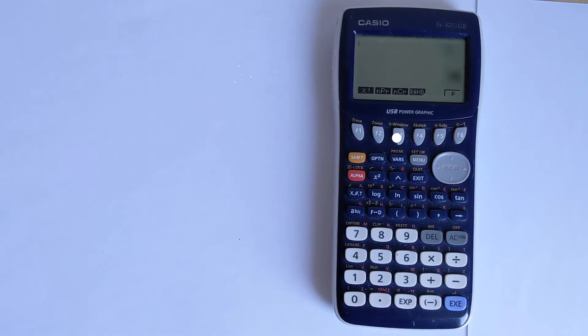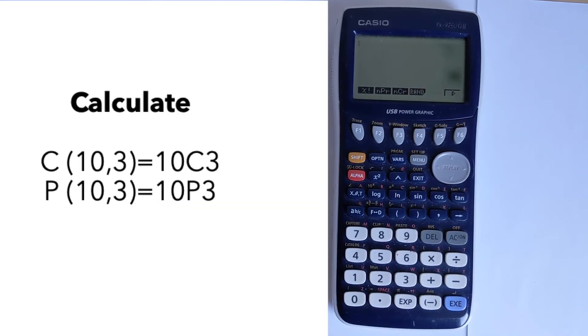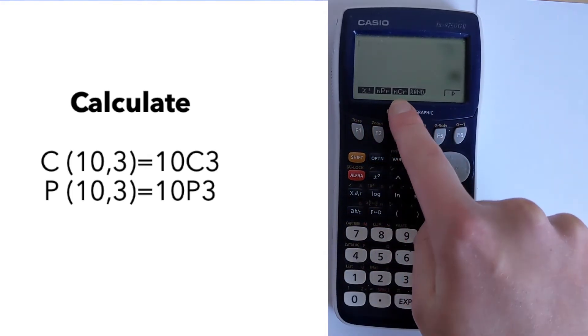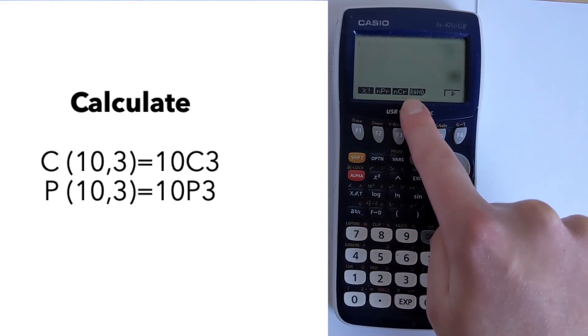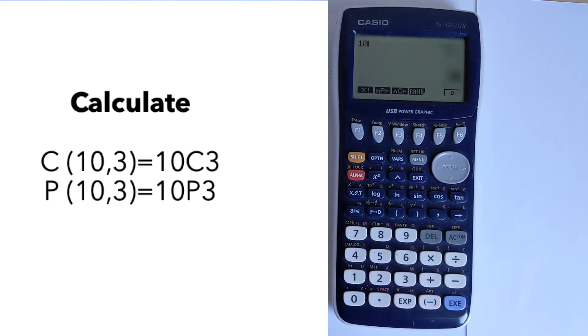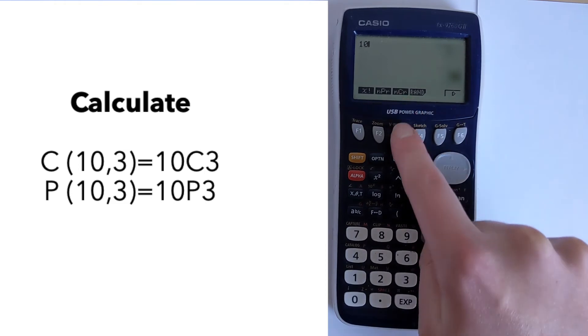Let's start by finding the combination. We've got to find 10 combination 3, which we'd enter as 10 as our N, then C, and then a number after that for your R, which in this case is 3. So we start by putting 10, which is our value for N.